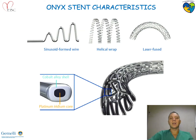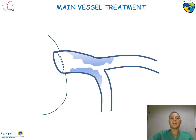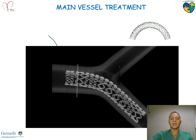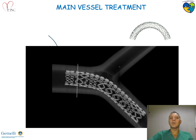This is the Onyx stent design. We have this sinusoid-formed wire with laser-fused struts that creates a unique stent platform. Looking at bifurcation stenting, what we most of the time do is implant the stent crossover across the side branch takeoff, and most of the time there is a bending, so these aspects of the Onyx may really facilitate the allocation of the stent cross.